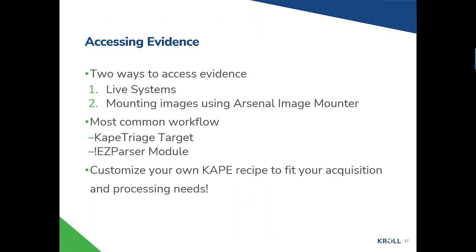There are two main ways to access evidence. You can run CAPE on a live system, or you can mount a forensic image — preferably using Arsenal Image Mounter. CAPE will warn you if you try to use FTK Imager, as Arsenal Image Mounter handles forensic images in a more preferred way. The most common CAPE workflow is the CAPE triage target with the easy parser module. If you're just learning CAPE, strongly recommend starting with that combination and building up from there.